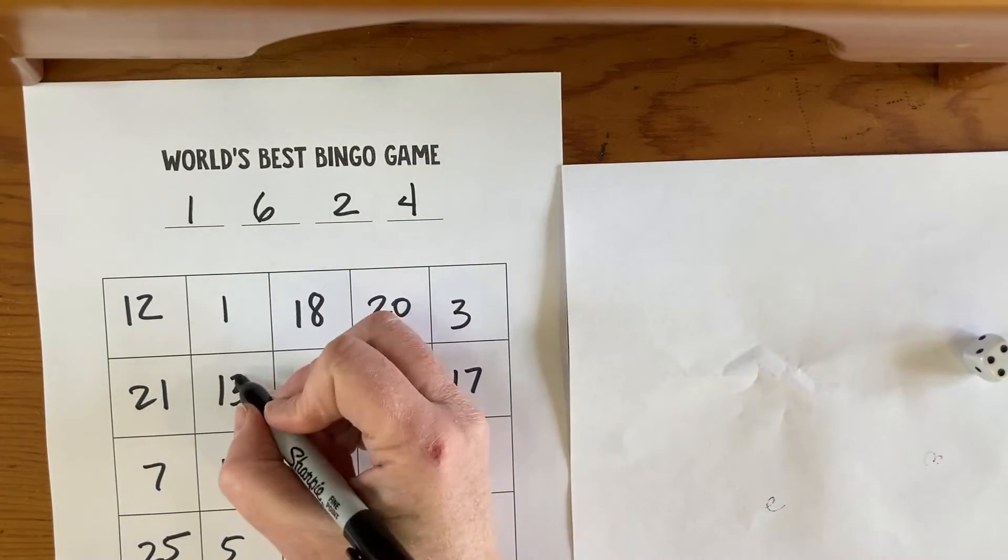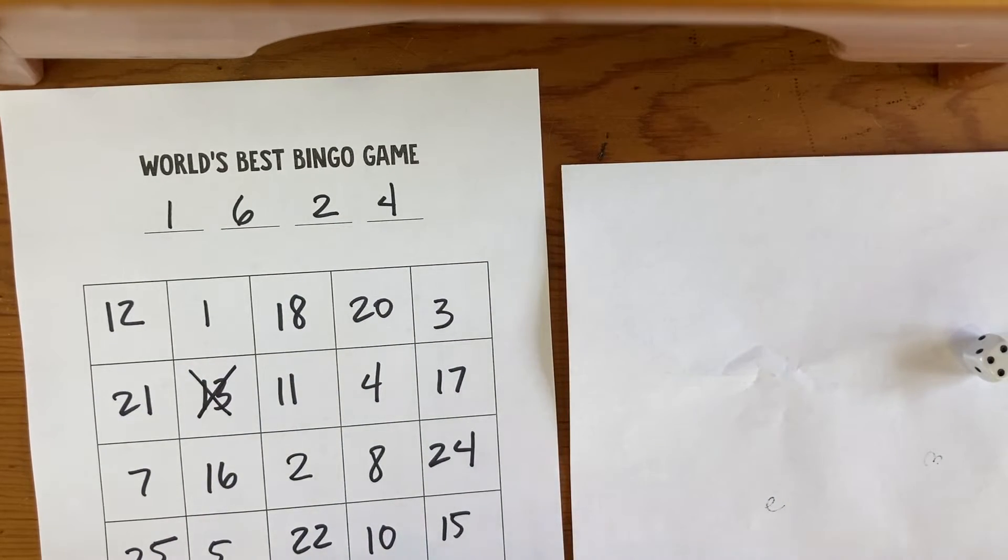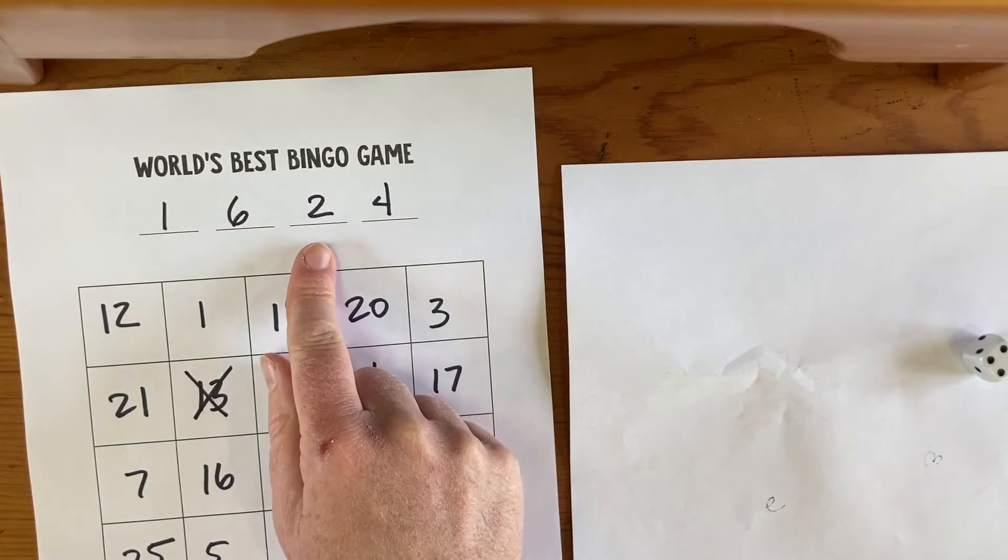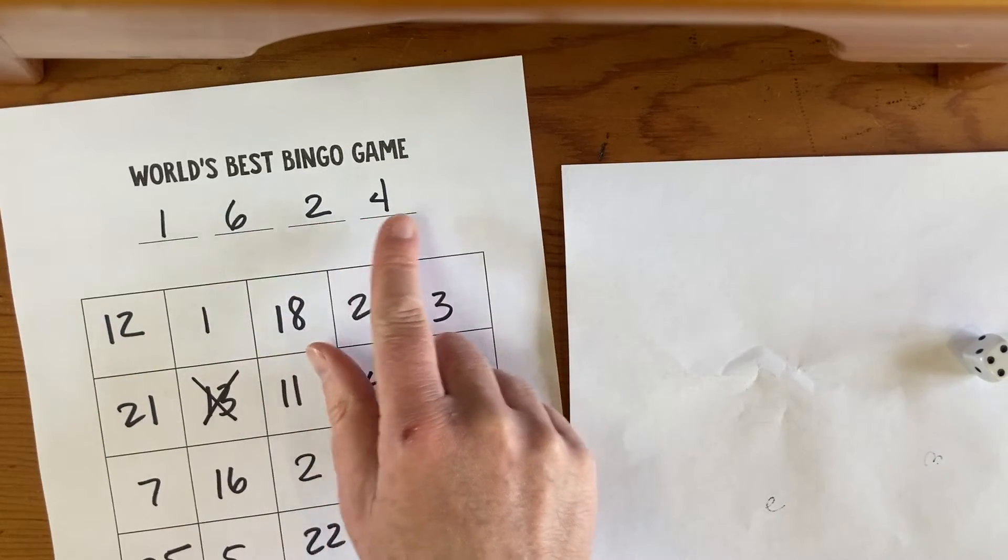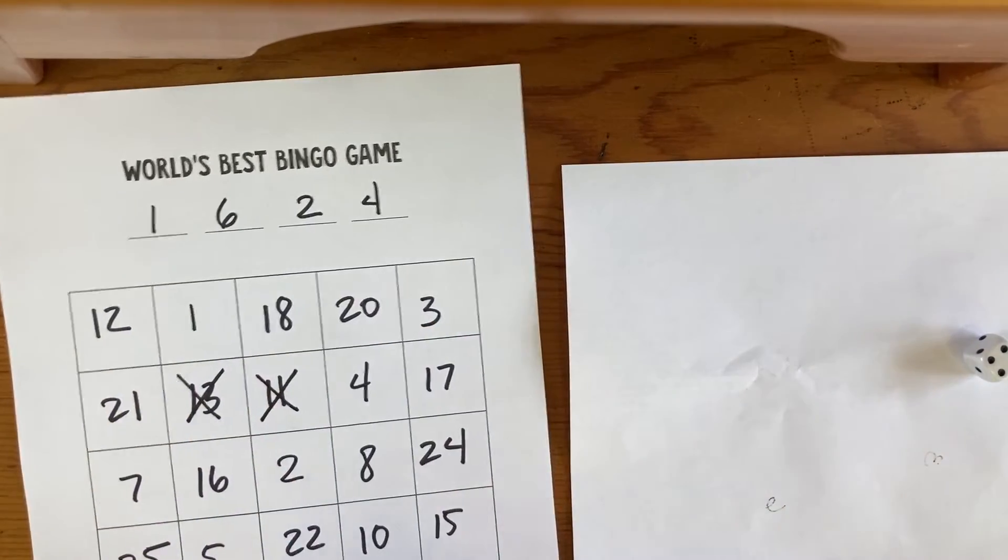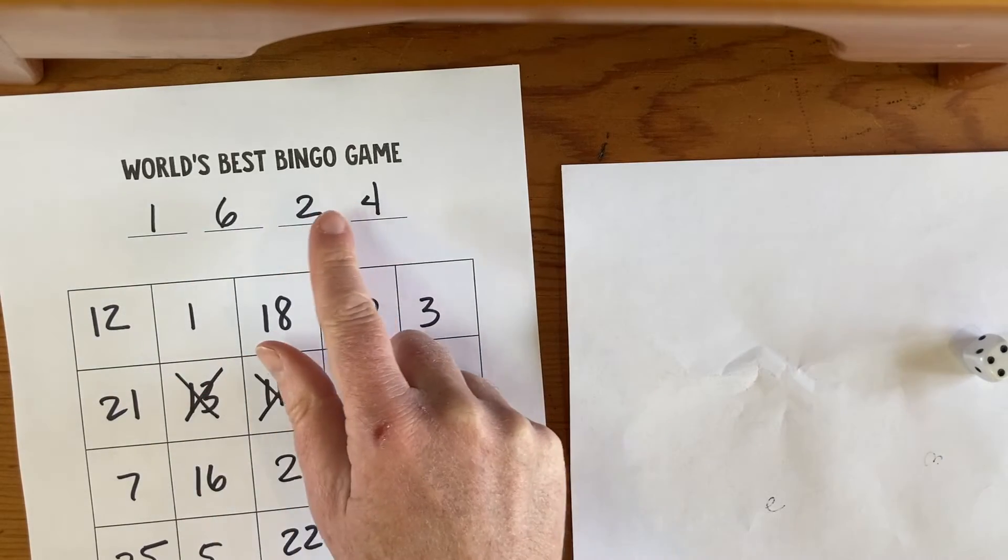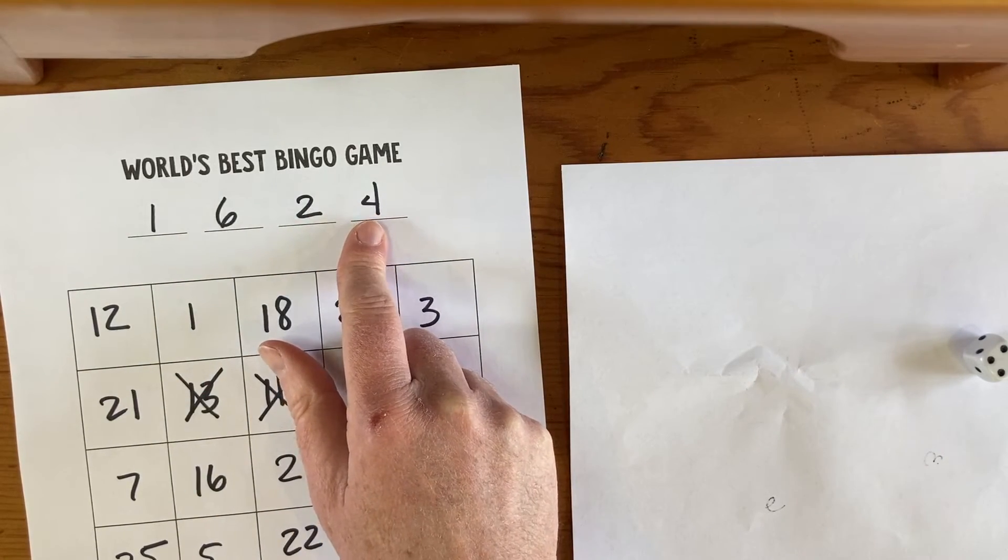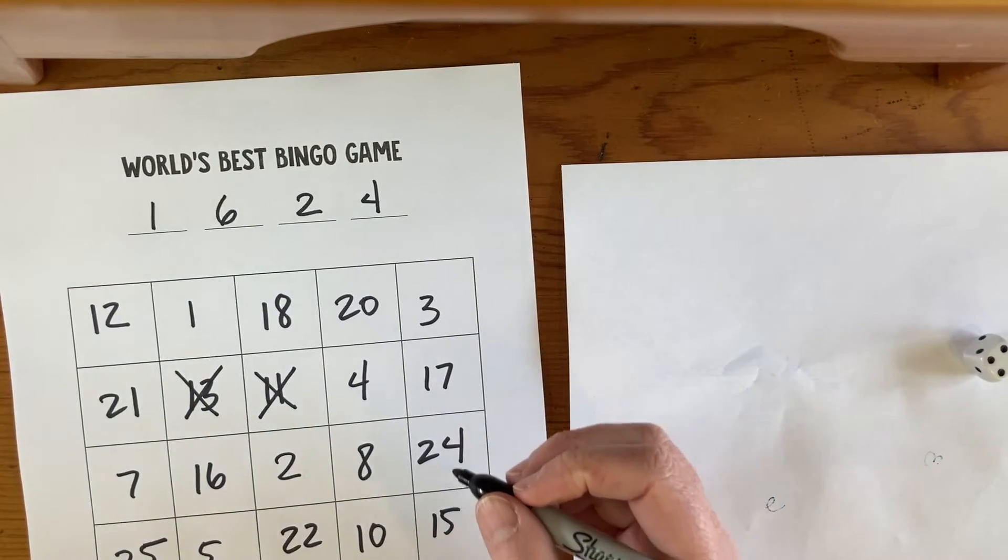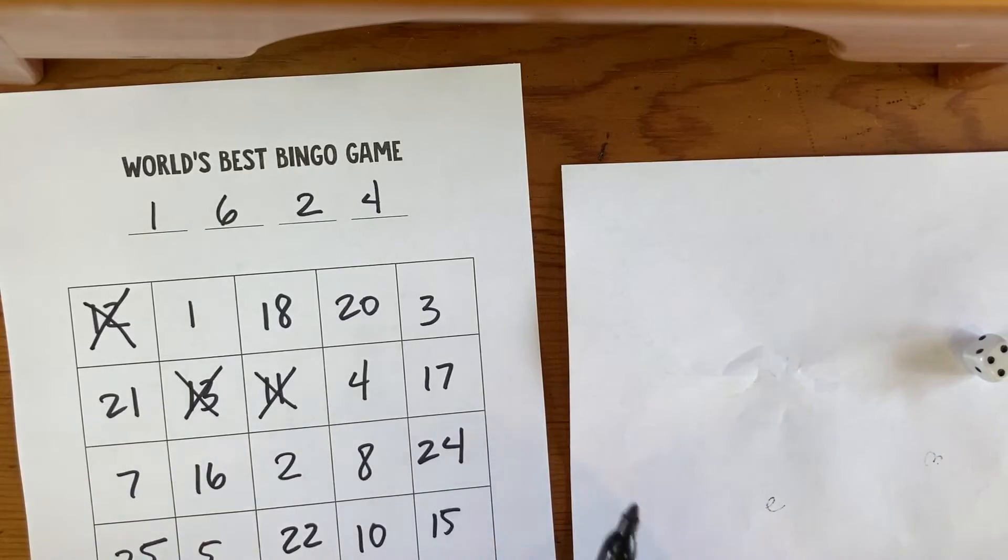Something else we could do: 6 minus 1 is 5, 5 plus 2 is 7, 7 plus 4 is 11. There's two in a row already. 1 times 6 is 6, and 2 plus 4 is 6. 6 plus 6 is 12. There we go.